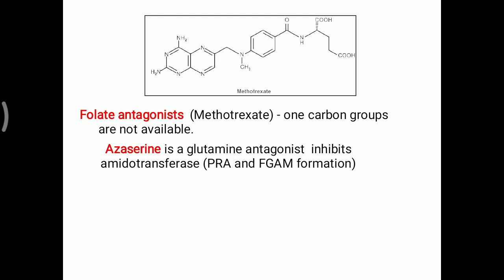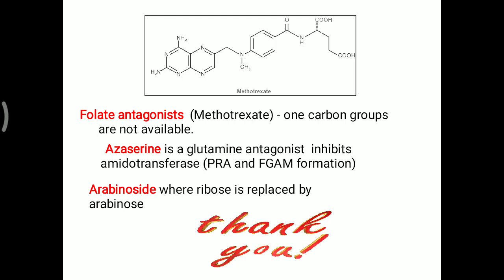Azaserine, which is a glutamine antagonist, will inhibit the amidotransferase enzyme, so PRA and FGAM formation will be inhibited. Remember that the 3rd and 9th nitrogen are added with the help of glutamine, so azaserine will inhibit further purine formation. Arabinose cytosides replace ribose with arabinose, so the attachment of phosphate over the ribose sugar will not occur, and these can also be utilized as anti-cancer drugs based on the purine analog mechanism.